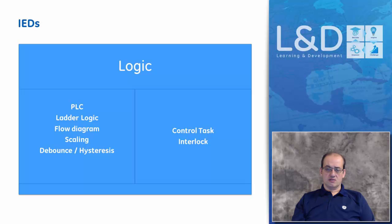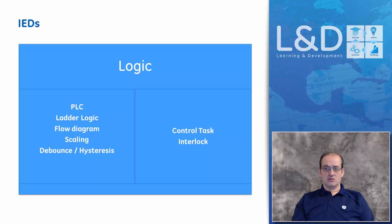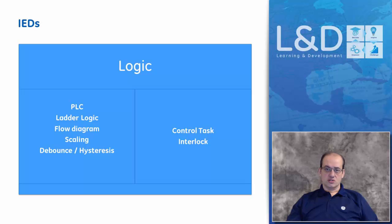Another approach is a flow diagram placed inside the device that states what actions the device must take based on a certain flow of data. Scaling means that data comes in and needs to be presented within a certain interval of values — for example, reading zero to five milliamps and presenting it to the operator as a value between zero and 32,767, requiring a scaling calculation over that full range.